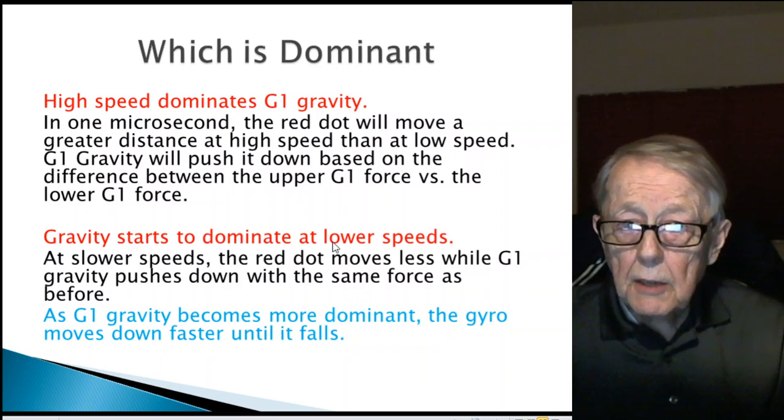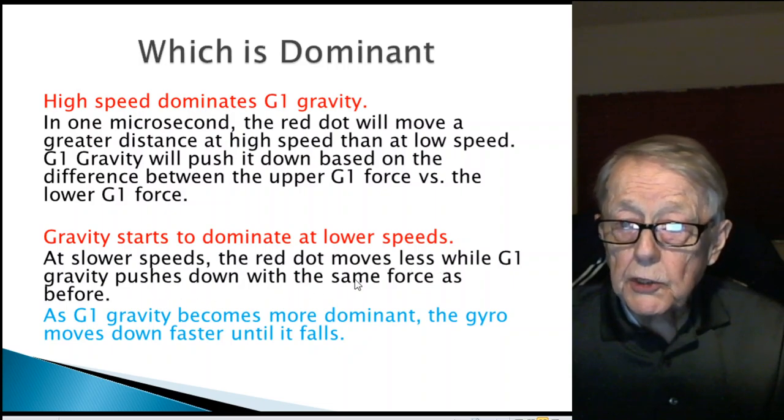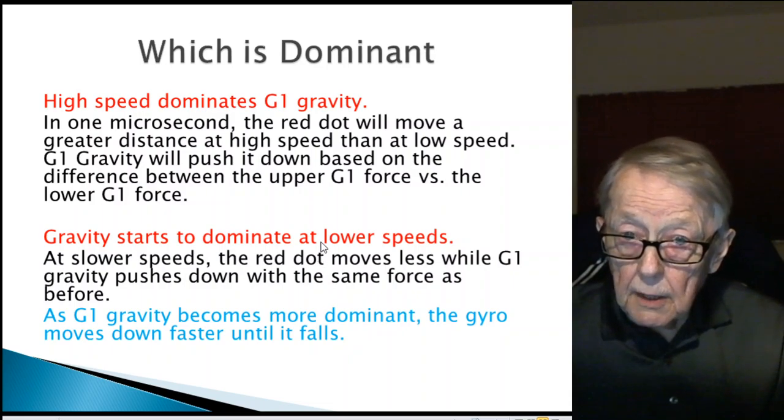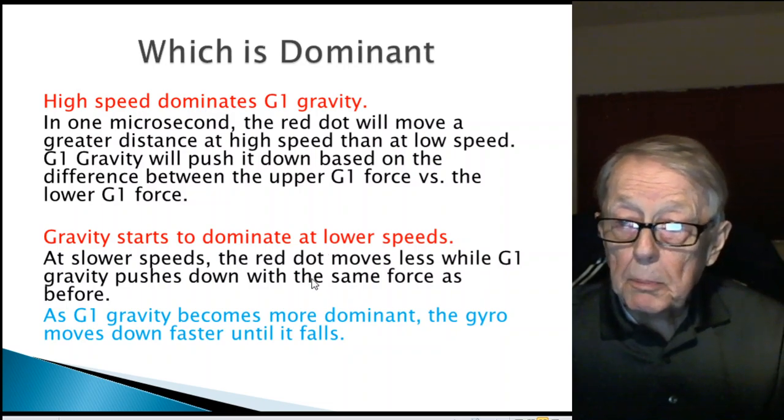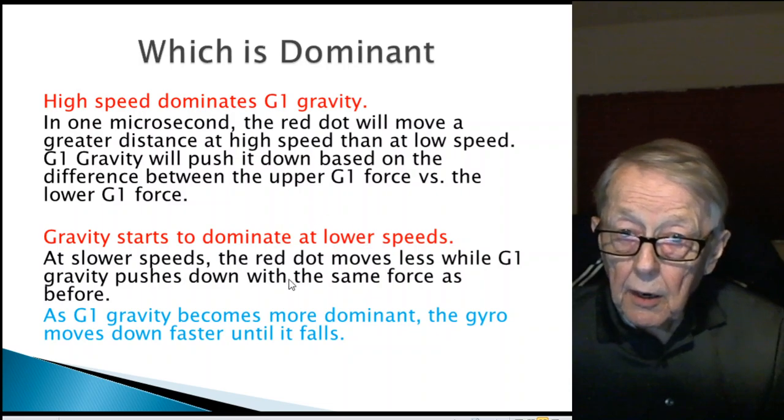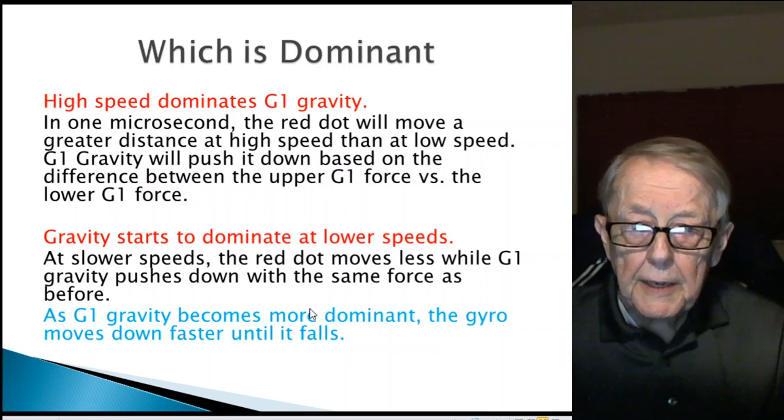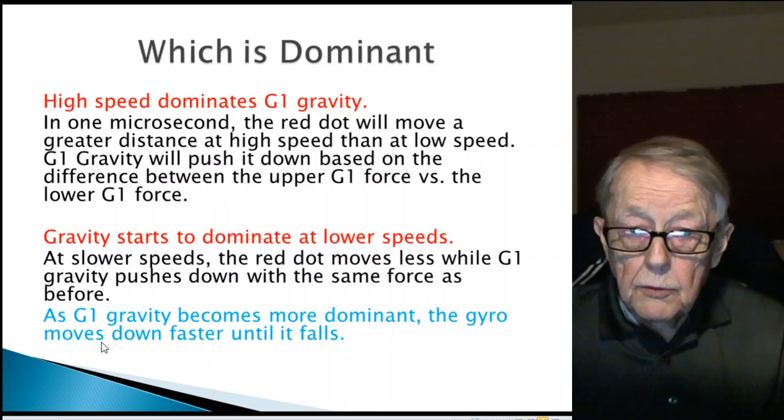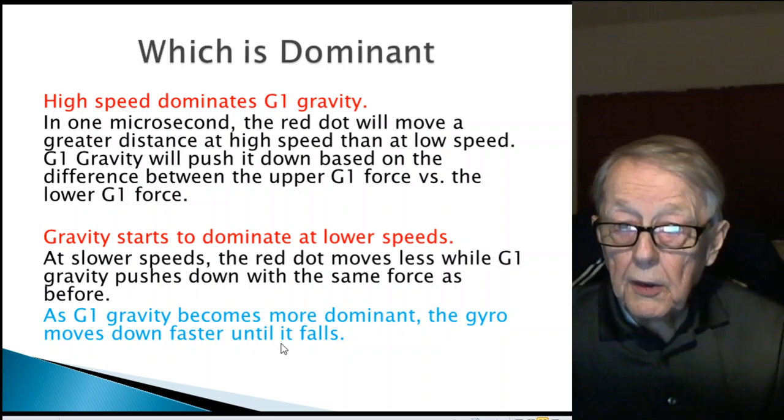When gravity starts to dominate at lower speeds, at slower speeds, the red dot moves a lot less while the G1 gravity pushes with the same force, basically the same force. But this is moving a shorter distance, this is moving down the same distance, and you're going to get proportionally more downward vertical movement and less movement in the rotational where the rotor is moving around angularly. G1 gravity, as it becomes more dominant, the gyro moves down faster because its gravity starts to dominate more and more until it falls.